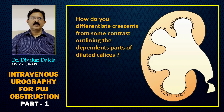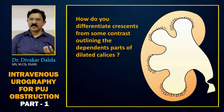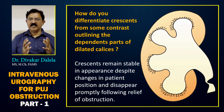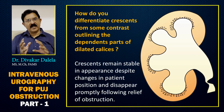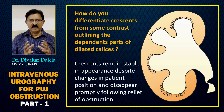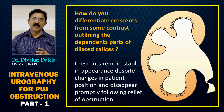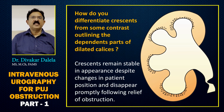You may ask: how do you differentiate the crescent from contrast outlining the dependent part of the dilated calyx? The simple answer is: if you change the position of the patient, the contrast in the collecting duct showing as crescent will remain static and will not change. But if contrast is in the calyceal lumen, as you change position from prone to supine or lateral, the contrast will move in the dilated calyx. So calyceal contrast will change position, but the crescent will not.